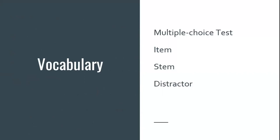Some vocabulary before we get too far. A multiple choice test has questions or items that have response options with a correct answer and usually at least one distractor, often several. Typically we see four-option answers — A, B, C, and D — where respondents choose one correct answer. The term 'item' means the question — formally, it's a task that students have to perform on a test, specifically a question they have to respond to.